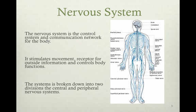The nervous system is the control system and communication network for the body. It stimulates movements, acts as a receptor for outside information, and controls bodily functions. The system is broken down into two divisions: the central and the peripheral nervous systems.